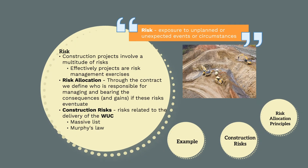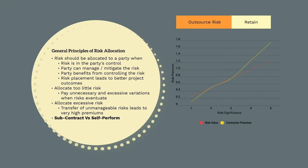Risk is the exposure to unplanned or unexpected events or circumstances. Construction projects involve a multitude of risks that need to be effectively managed to achieve successful project outcomes. Through the contract and supporting documentation we need to clearly define who is responsible for managing and bearing the consequences — or gains — if these risks eventuate. The general principle is that risk should be allocated to the party that is in control of the risk, has the capacity to manage and mitigate it, benefits from controlling it, and where that allocation leads to better project outcomes.